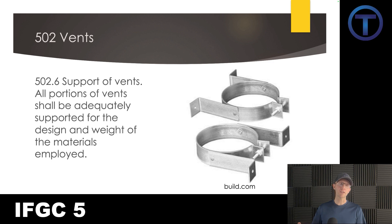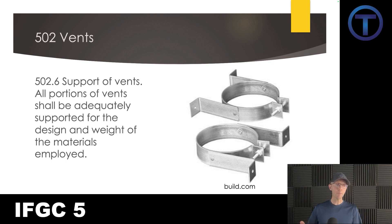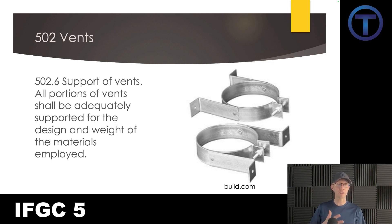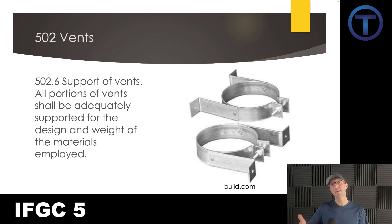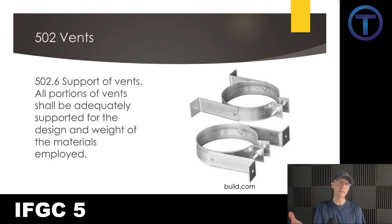502.6 talks about supporting vents. Just like any other pipe we install, it has to have proper support. It says all portions of the vents shall be adequately supported for the design and weight of the materials employed. Chapter 3 in this book gives hanger and support spacing that may apply depending on the vent pipe type, and manufacturer installation instructions may also provide information about how vents are to be hung and how often supports should be installed.